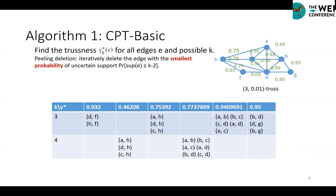For example, consider this graph for k equals 3. The minimum probability is 0.032. So we remove this edge and record the support probability as the probabilistic trustness. Then we update the support probability of affected edges. We repeat the above process until all edges are removed.